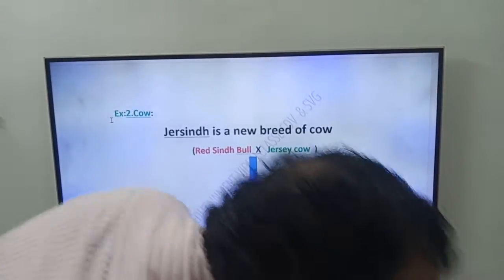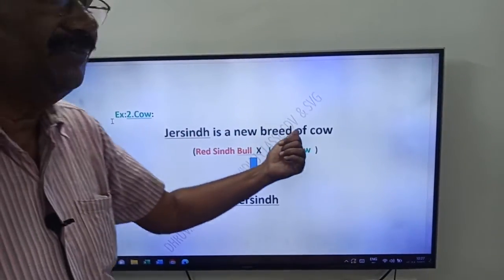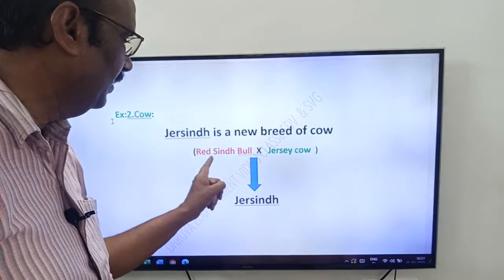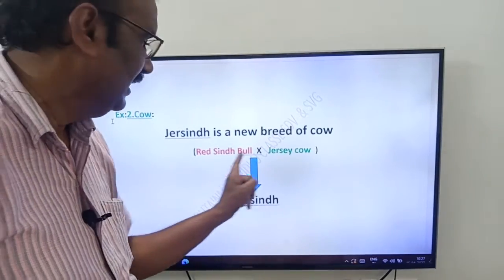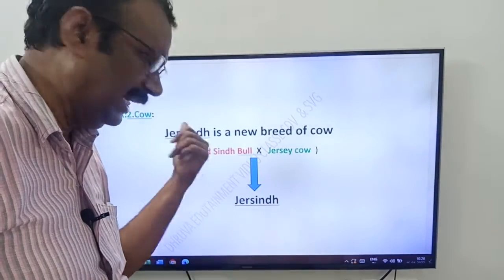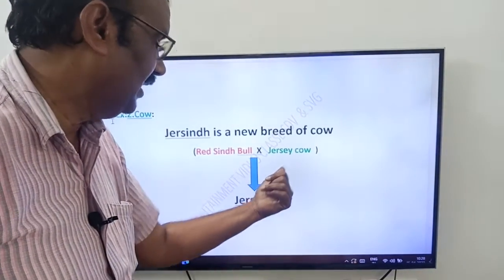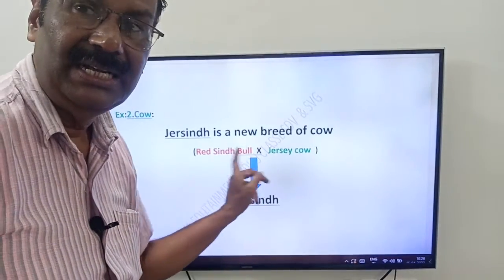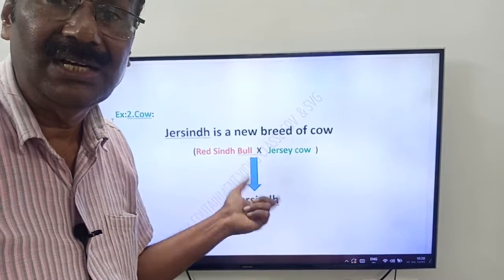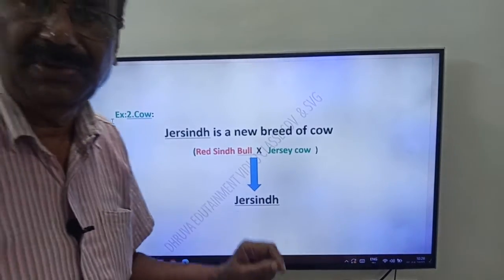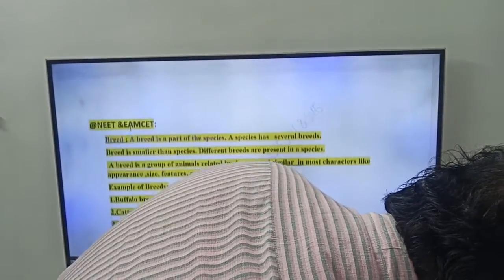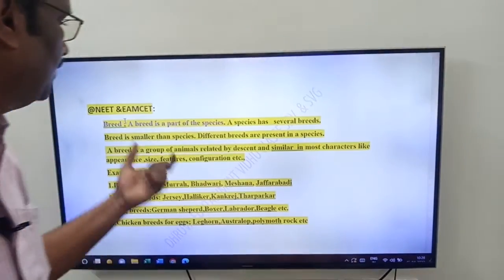Next one more example, friends — in cows. Gersind is a new breed of cow, friends. This is for NEET and MSET. Gersind is a new breed of cow. It is a cross between Red Sindhi bull and Jersey cow. They got a new breed: Gersind. This is one breed crossed with another breed, giving rise to a new breed. This is called crossbreeding. So Gersind is the best example for crossbreeding, whereas Isardale is a sheep.